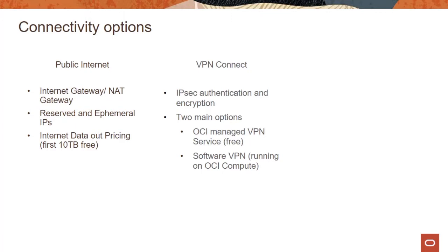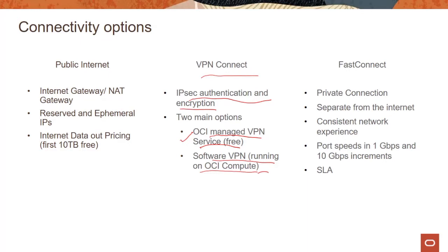These options are around VPN Connect and FastConnect. VPN Connect is basically an option where you connect two different sites using the IPsec protocol. There are two main options available here. The first is an OCI managed VPN service, which is offered for free — you really don't pay for anything except the underlying resources. The second option is you can run your own software VPN. If you have a Linux VM, you could install your own software like Libreswan and run it yourself. But the OCI managed VPN service is offered for free — it's a standard VPN between two different sites, one being your Oracle Cloud environment and the other being your on-premises environment.